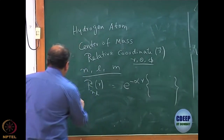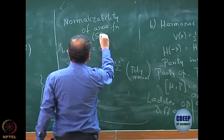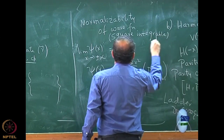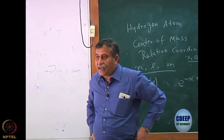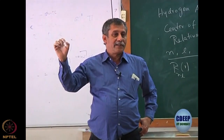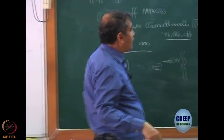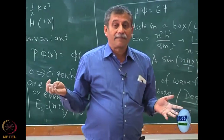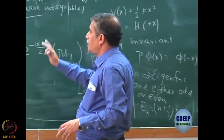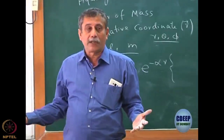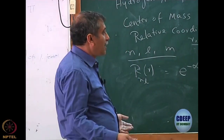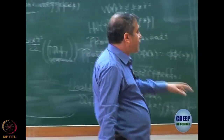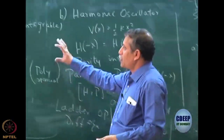This is the normalizability of the wave function, also called square integrability. Square integrable means the modular square of the wave function, when integrated over the entire volume, must give a finite number — not infinity. So we learned two important conditions of the wave function, called goodness criteria: one is continuity of the wave function, and another is square integrability of the wave function.